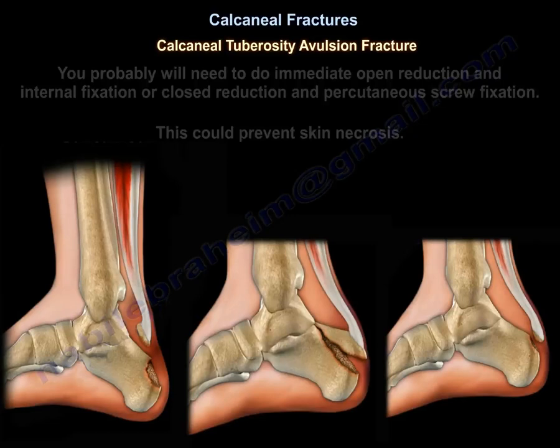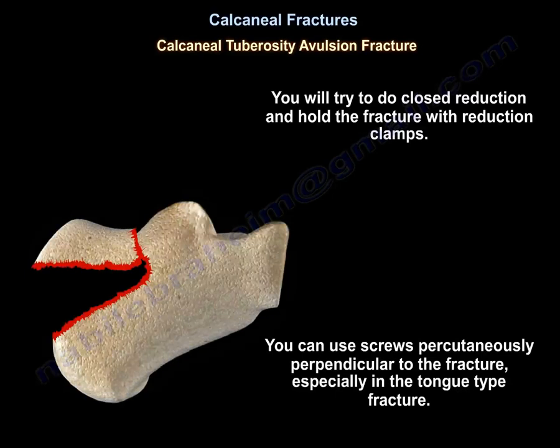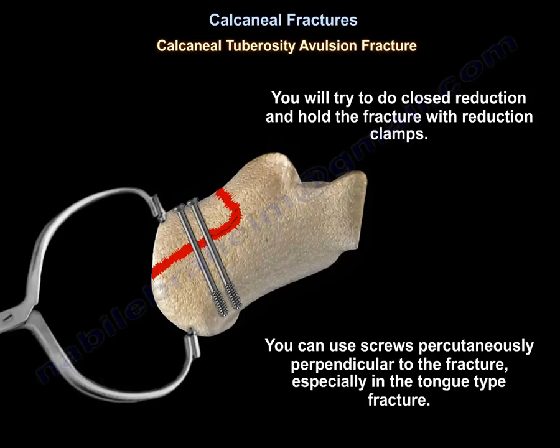You will probably need to do immediate open reduction and internal fixation, or closed reduction and percutaneous screw fixation — this can prevent skin necrosis. To do that, you try to do closed reduction and hold the fracture with reduction clamps, then use screws percutaneously perpendicular to the fracture, especially in the tongue-type fracture.